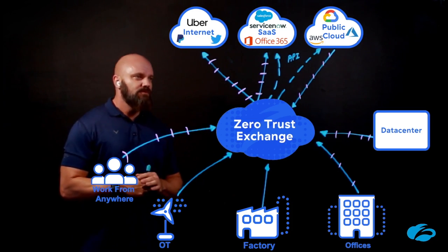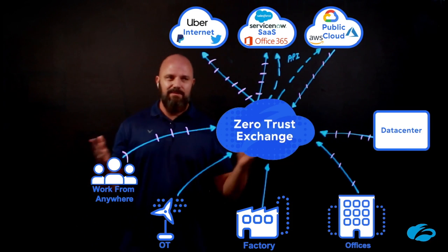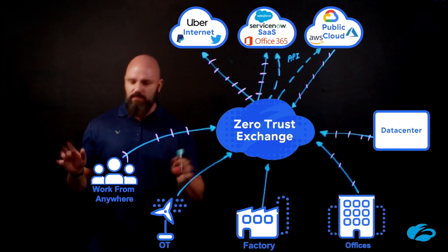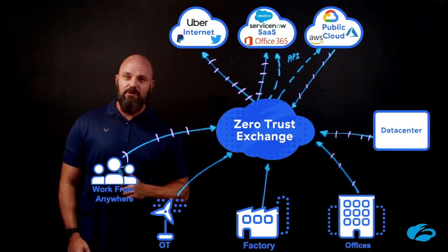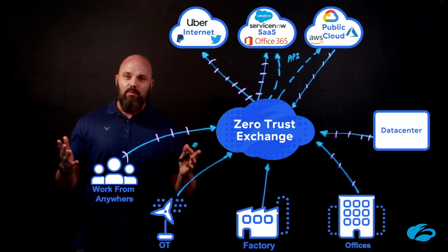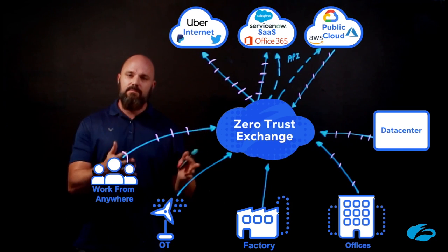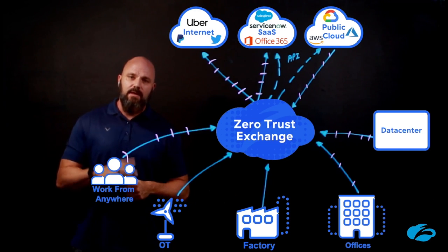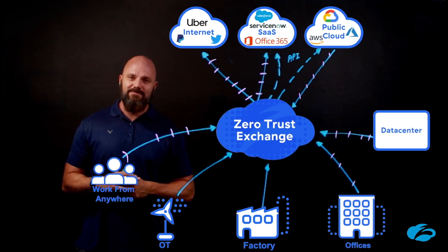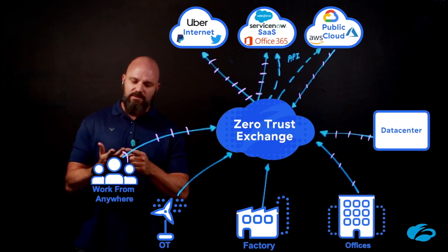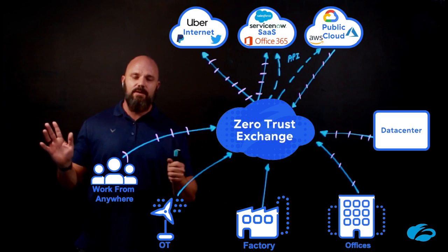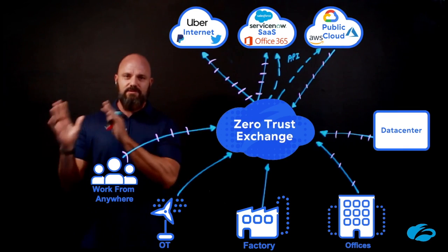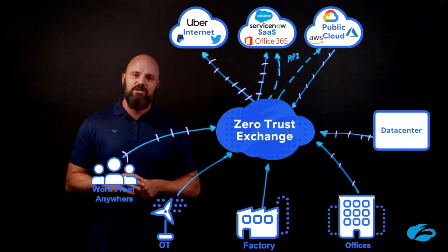Now you might be thinking this is pretty radical and difficult — probably take years to roll out. Not at all. This can get done very, very quickly — three months, maybe. It really is just up to your appetite. I always want to under-promise and over-deliver on my platform, and that's what I'm doing here today. My ask of you: before you pick up the phone and call me, review the SSE, SASE, or Zero Trust frameworks provided by third parties. What you're going to see is feature parity between what they're saying and what the Zero Trust Exchange Cloud can do for you.